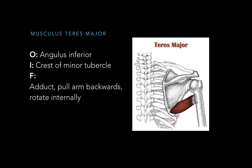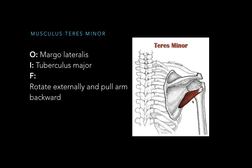Musculus teres major originates at angulus inferior and inserts at the crest of the minor tuberculum — the humerus is shown transparently here to show the insertion point. Its function is adduction, pulling the arm to the midline, pulling the arm backwards, and rotating it internally. Musculus teres minor originates at margo lateralis and inserts at the major tubercle. When it contracts, it rotates the arm externally and also pulls the arm backwards.